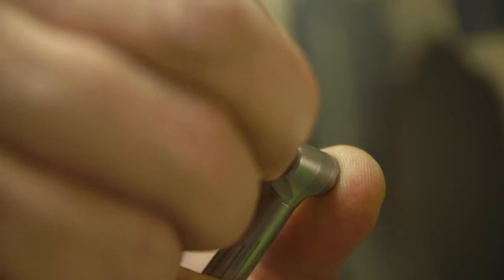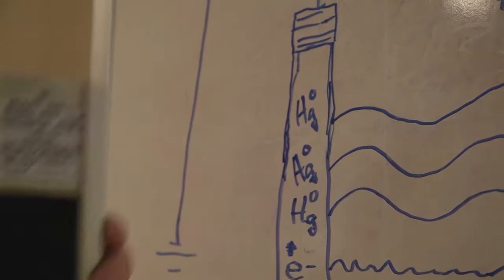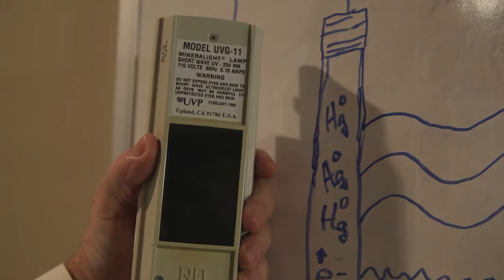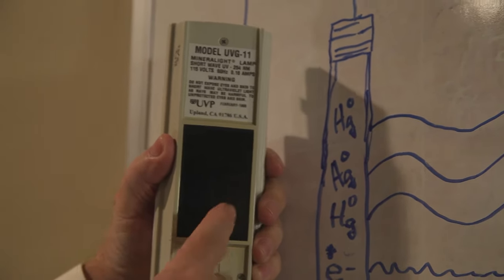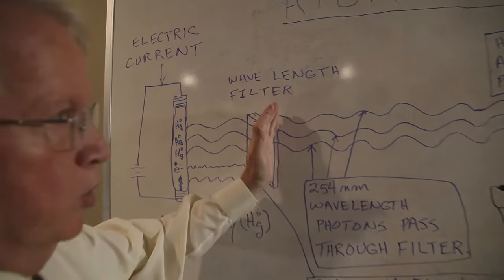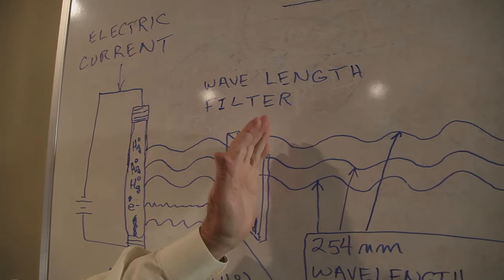To activate a mercury lamp—a mercury lamp is a lamp that contains mercury vapor that you run a current through—that mercury emits a light of a special wavelength that water and air will not absorb.